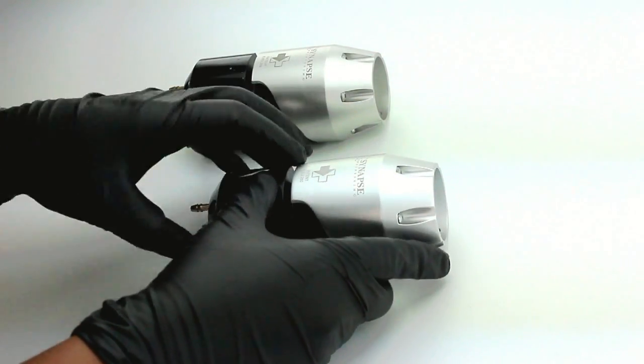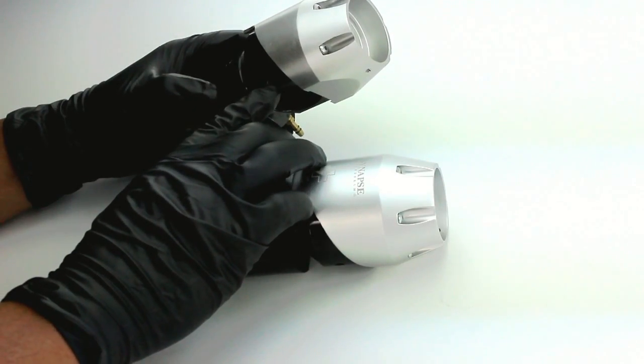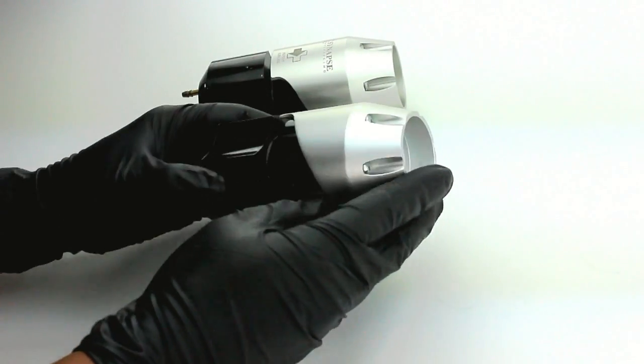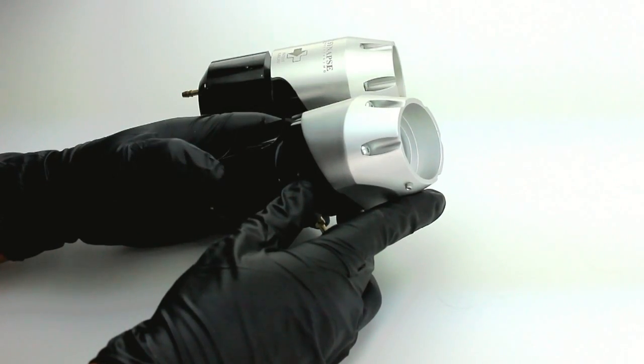The early Gen 1 valves have an M3 set screw to hold the adapter flange in, and the newer ones have an M4.